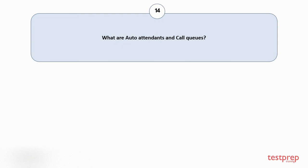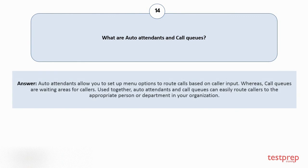Question number 14: What are auto-attendance and call queues? Auto-attendants allow you to set up menu options to route calls based on caller input. Call queues are waiting areas for callers. Used together, auto-attendants and call queues can easily route callers to the appropriate person or department in your organization.